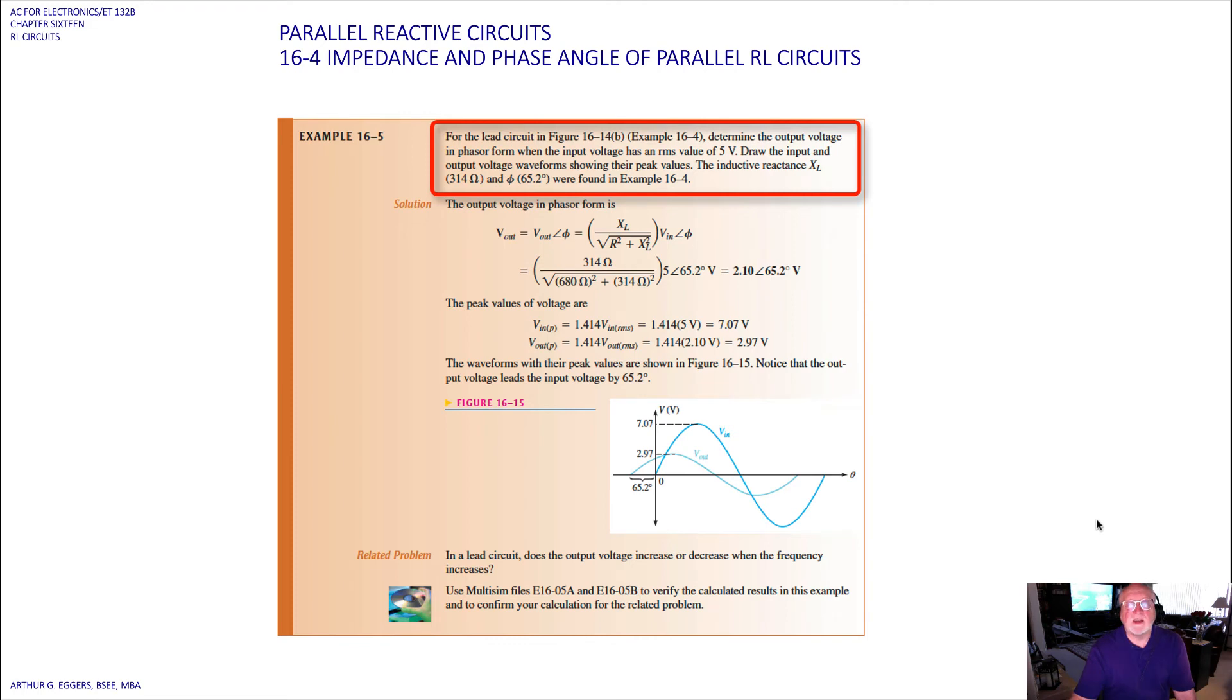So let's look at an example for the lead circuit shown below. Determine the output voltage in phasor form when the input voltage has an RMS value of 5 volts. Draw the input and output voltage waveforms showing their peak values. The inductive reactance X sub L, X sub L of 314, and the angle phi of 65.2 degrees were found in the previous example. So the first thing we need to do then is determine the output voltage in phasor form.